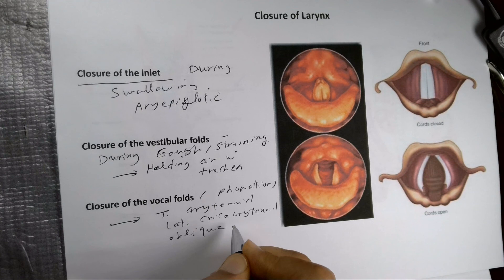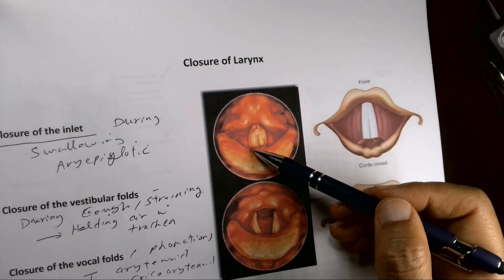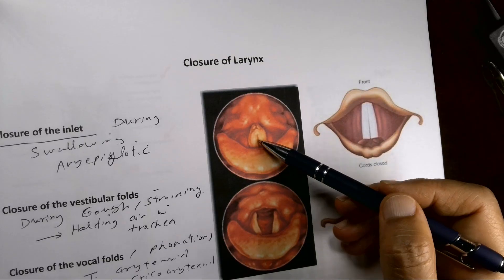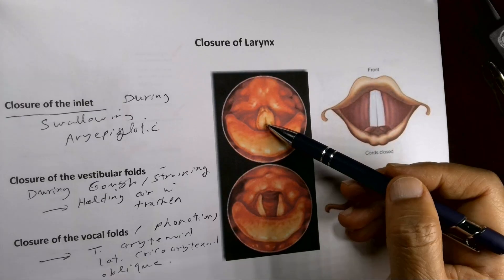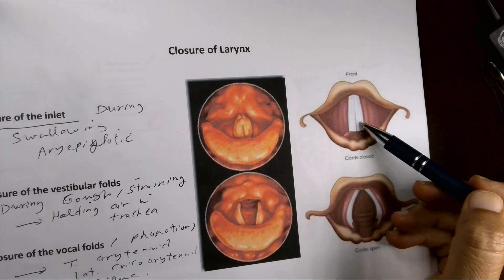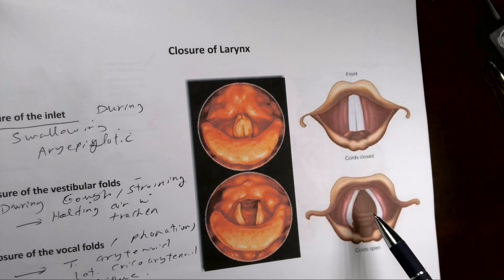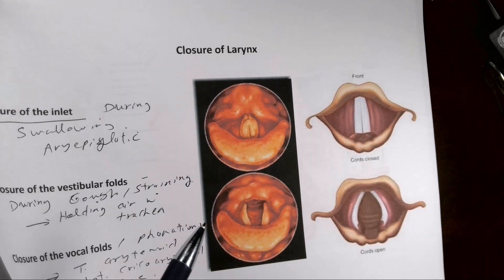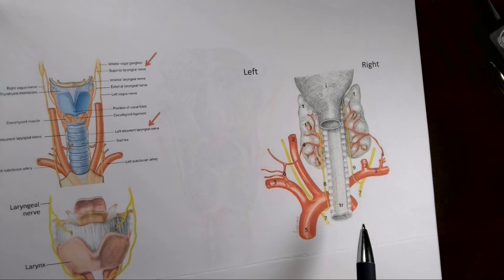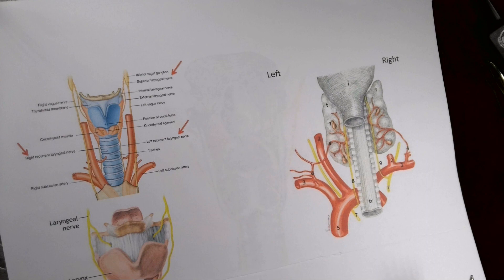The oblique arytenoid and the cricothyroid also play some role. You can see the vocal cords approximating each other during speaking, and opening wide during breathing. This is a good refresher for the function of the muscles. Now let us move to an important topic: the nerve supply of the larynx.